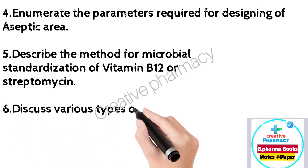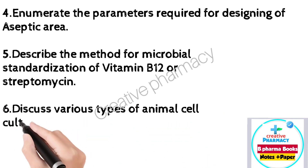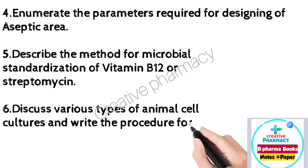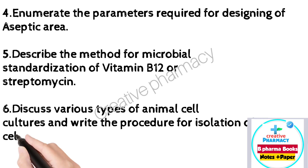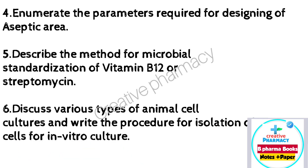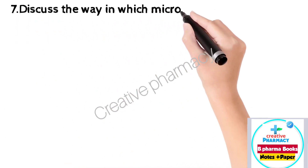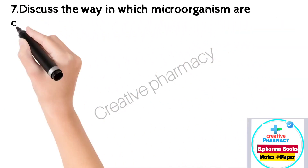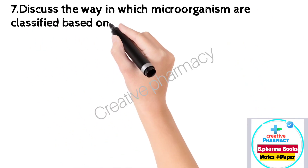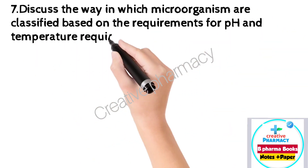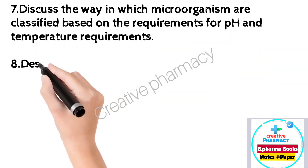6: discuss various types of animal cell cultures and write the procedure for isolation of cells for in vitro culture. 7: discuss the ways in which microorganisms are classified based on their oxygen and temperature requirements.